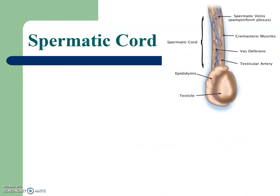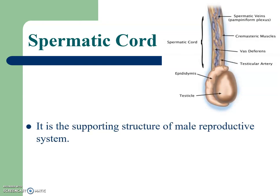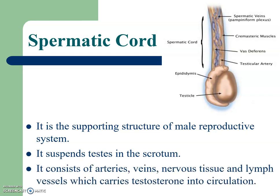Spermatic Cord: it is the supporting structure of the male reproductive system. It suspends the testes in the scrotum and consists of arteries, veins, nervous tissue, and lymph vessels, which carry testosterone into circulation.